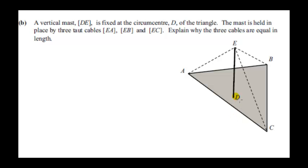A vertical mass dE is fixed at the circumcenter d of the triangle. So recall that the circumcenter of a triangle is the center of a circle that can be drawn through the three corners of the triangle. So that means the distance of d to b, d to c and d to a must be radii of that circumcircle. If we want to draw a circle through the three corners. So d must be equidistant from those three points.